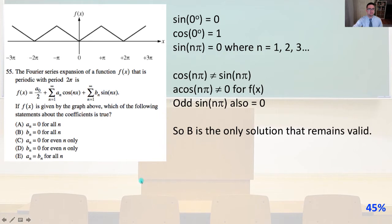Number 55. The Fourier series expansion of a function f of x that is periodic with period 2π is f of x equals, and here's the equation right here with our constants that we're curious about, a_n and b_n. If f of x is given by the graph above, which of the following statements about the coefficients is true? So let's just look at a couple things. At zero, f of x is zero.